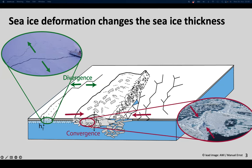Let's return to our schematic of deformation. When there is sea ice divergence and leads form, we have a lot of new ice formation in winter, and it is much more efficient new ice formation than in the surrounding thicker ice because we have a much faster heat exchange between the ocean and the atmosphere. Because the process that creates those leads is dynamically driven, I still refer to it as divergence-induced new ice formation and count it as part of the dynamic thickness change.